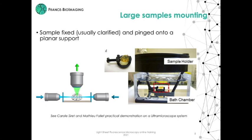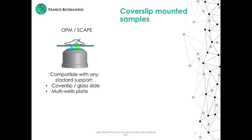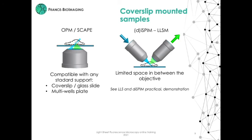Finally, samples can be mounted on a cover slip as in more standard fluorescence microscope techniques. In this case, samples are mostly small in the range of a few tens of micrometers, such as single cells, small organoids, or tissue slices. They can be imaged on single-objective implementations such as the oblique plane microscope and SCAPE system, where the microscope geometry is compatible with multi-well plate format, opening the doors to parallelization of the acquisition process. Light-sheet configurations with both objectives in the vertical plane, such as the diSPIM and the lattice light-sheet microscope, also use these cover-slip-mounted samples.